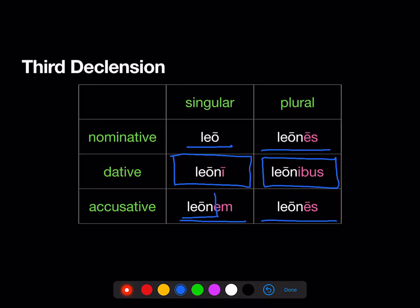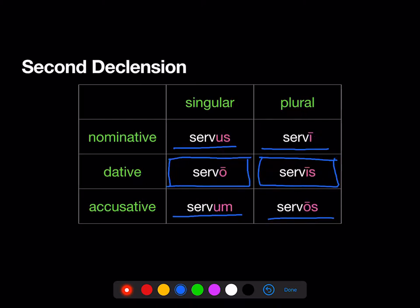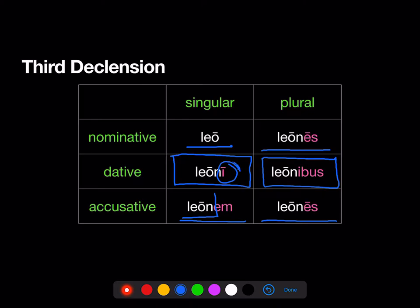Beware. Here's another ambiguous form. The long -i that shows us that 'leoni' is dative singular of the third declension looks just like the long -i that shows us that 'servi' is nominative plural in the second declension. So when you see a long -i ending now, you're going to have to think: is that noun a second declension noun, in which case the long -i means nominative plural, or a third declension noun, in which case the long -i means dative singular.